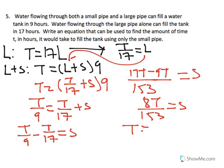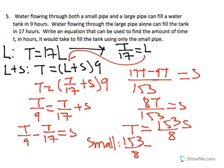We'll solve for t, so t is equal to 153 over 8s. So for the small pipe, the time is 153 over 8 or equal to 19.125 hours.